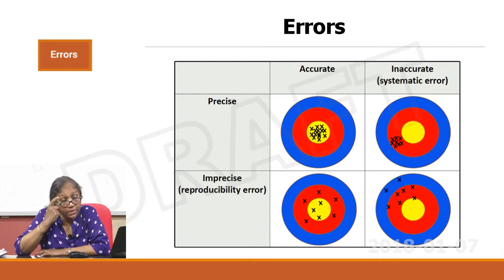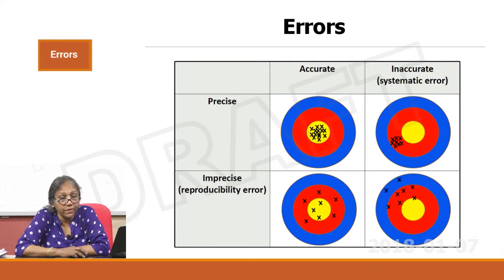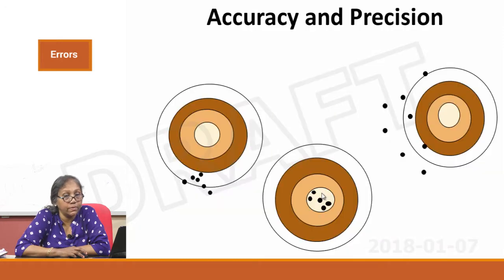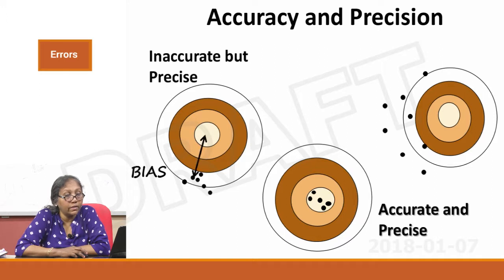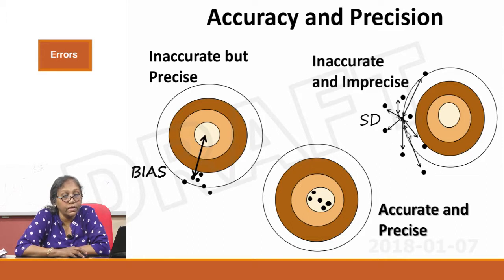What are the reasons for your systems to shift into a systematic error direction or a random error direction? To recap: accurate and precise means all on target; inaccurate but precise means close together but off target; inaccurate and imprecise means far away from the target with a lot of dispersion. Now let us examine inaccuracies first.